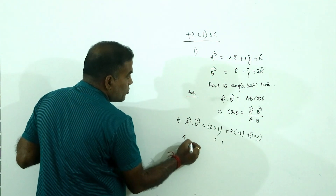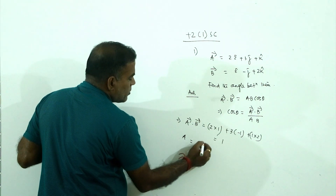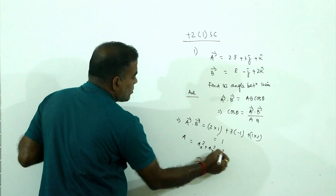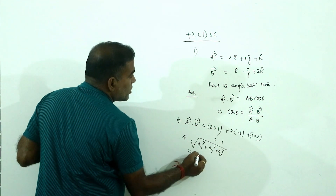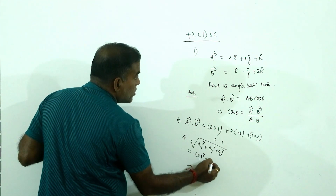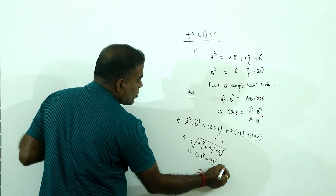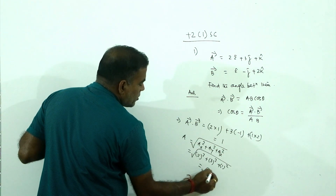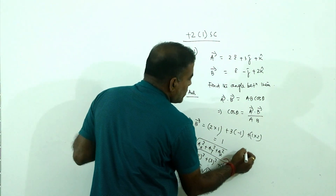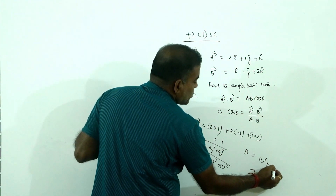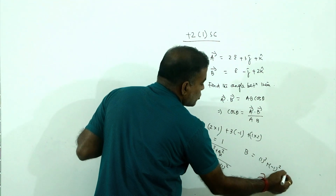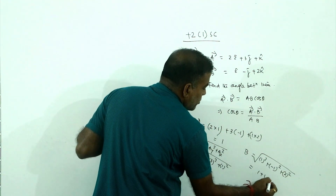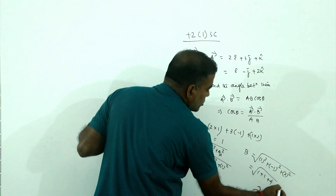The magnitude of a equals the square root of 2² plus 3² plus 1², which is root 14. Similarly, the magnitude of b equals the square root of 1² plus (−1)² plus 2², which is 1 plus 1 plus 4, that is root 6.